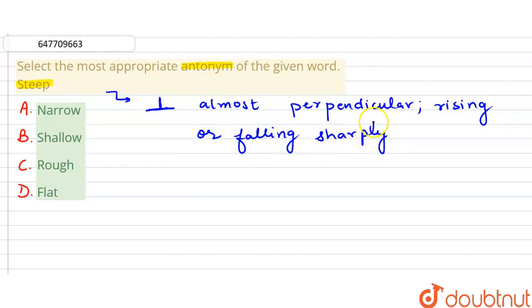Let's see the options. Option A is narrow. What does narrow mean? Narrow means something of small width in relation to length.